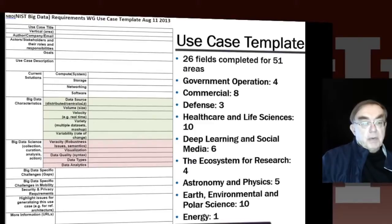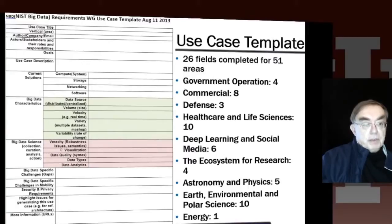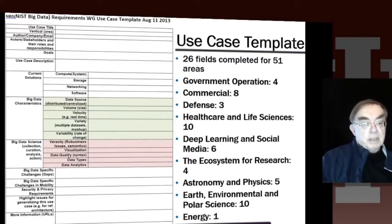Now we come to the actual big data itself: where the data comes from, the size, the velocity, the variety — the three major Vs. We also have variability, the rate of change of the data. Variety describes the different types of data, and variability is the change in the size and nature of the data over time. Then we come to veracity, which is the robustness and semantics of the data. We have visualization of the data and quality. Quality and veracity address different aspects of correctness — one at the semantic level, and one at the actual data value level.